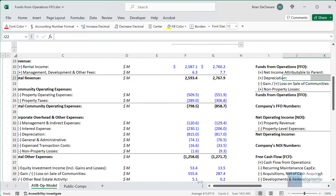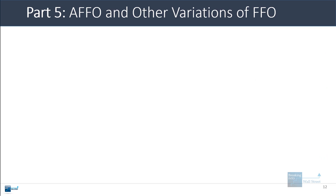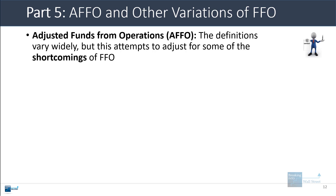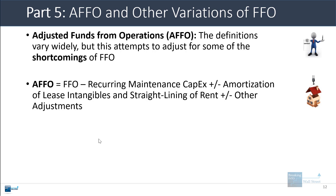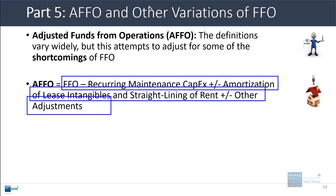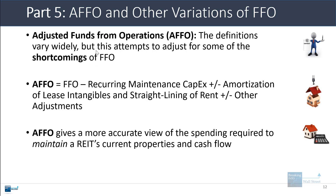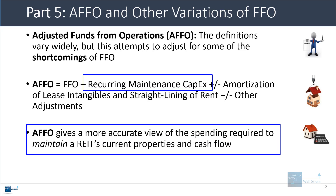Net operating income paints an even rosier picture than FFO because at least FFO deducts interest expense, but NOI doesn't even include that. For other variations of FFO, the most famous is adjusted funds from operations or AFFO, normally defined as FFO minus recurring maintenance capex, adjusted for amortization of lease intangibles and the straight-lining of rent, and some other adjustments that bring it closer to actual free cash flow. The idea is that deducting recurring maintenance capex gives a better sense of what the REIT needs to spend and what it generates from existing properties after maintenance costs.